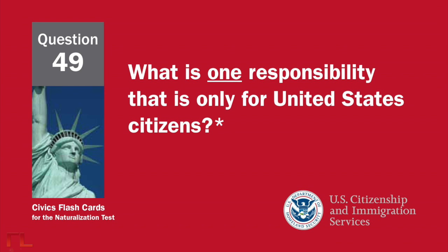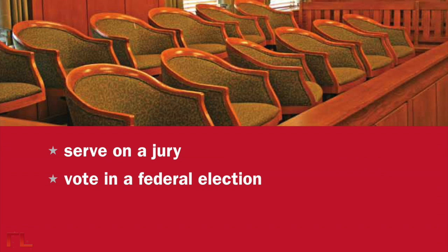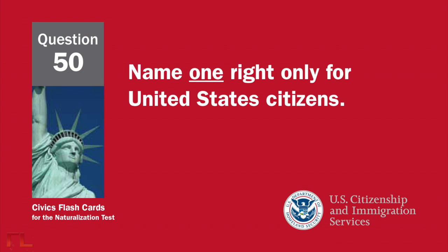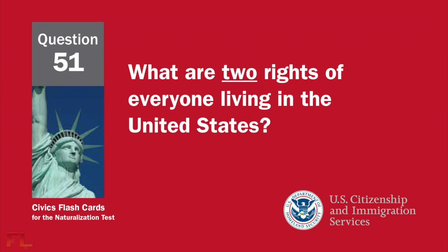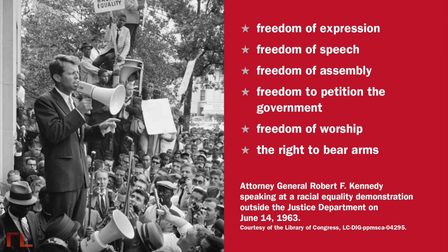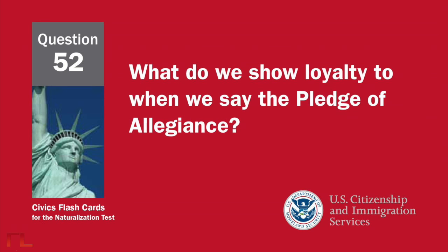What is one responsibility that is only for United States citizens? Serve on a jury, or vote in a federal election. Name one right only for United States citizens. Vote in a federal election, or run for federal office. What are two rights of everyone living in the United States? Freedom of expression, freedom of speech, freedom of assembly, freedom to petition the government, freedom of worship, or the right to bear arms.